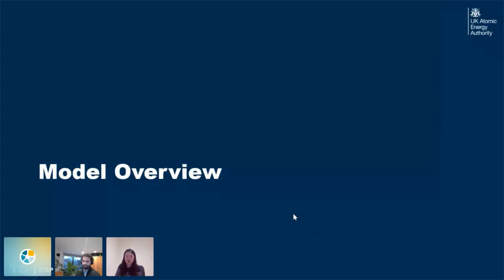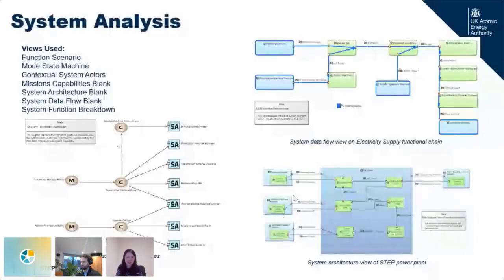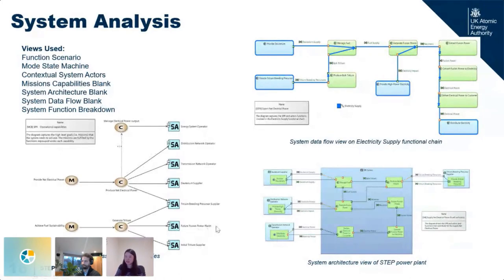Starting with system analysis: the initial focus has been analyzing key system missions and capabilities by conducting a needs, goals, and objectives analysis on the STEP prototype plant — our system of interest. We analyze system missions and realize them into functional chains, allocated to our system of interest and surrounding actors to define the scope and describe what's in and out of the system. We have also described initial system mode and state machine diagrams.